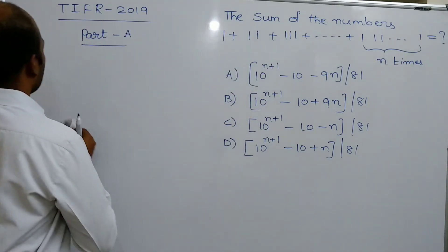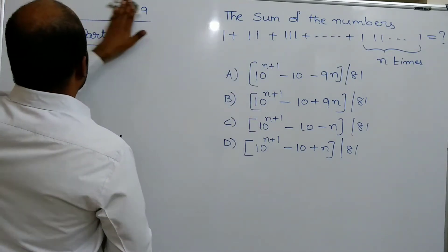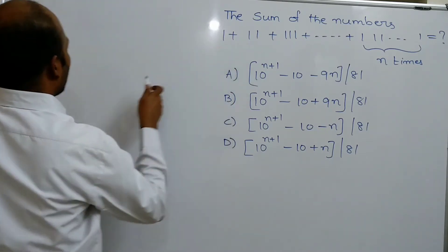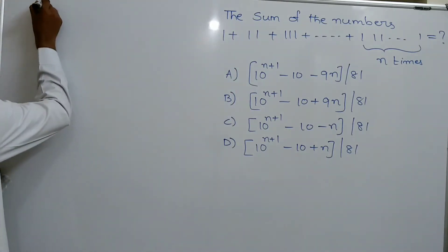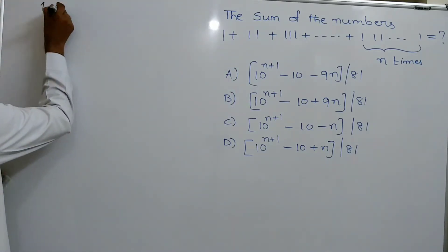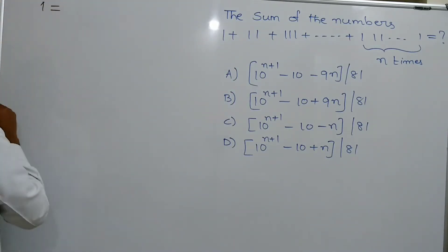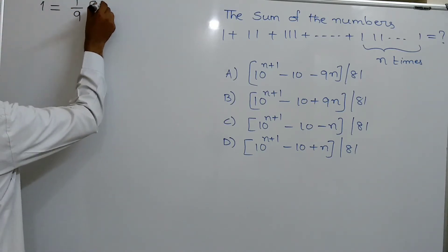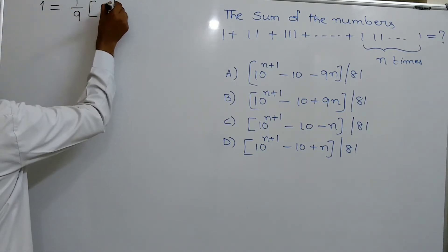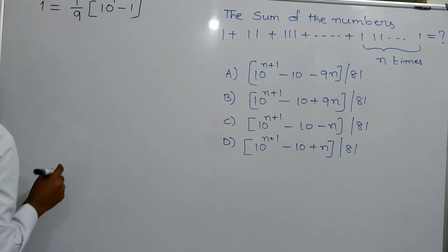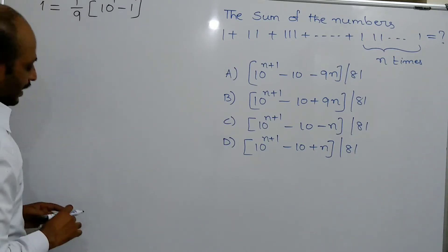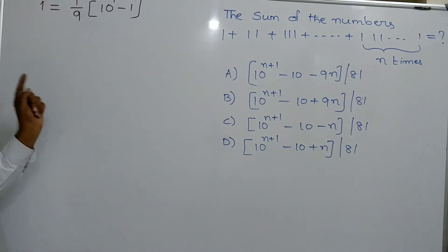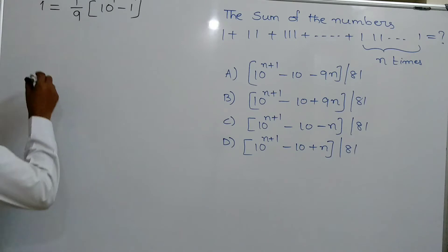Let us see the solution. This can be rearranged: the number 1 can be written as 1 by 9 into (10 power 1 minus 1).